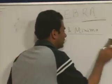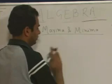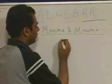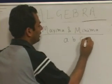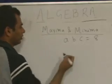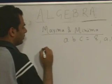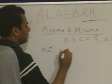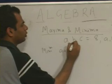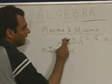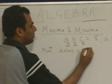Let us take a couple of applications of this. For example, if a into b into c is equal to 8, and a, b, c are all positive, we need to find the minimum value of a plus b plus c. The product of these 3 numbers is 8, so all numbers should be equal: 2 into 2 into 2. So a equals 2, b equals 2, c equals 2, and we get a plus b plus c as 6.